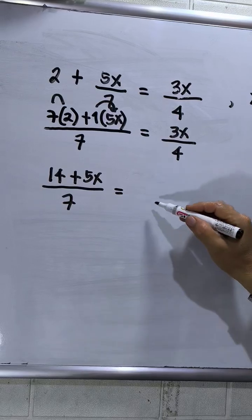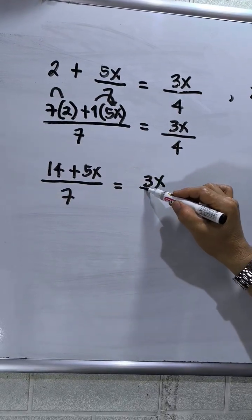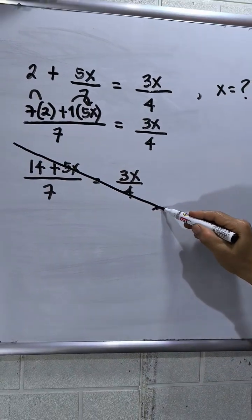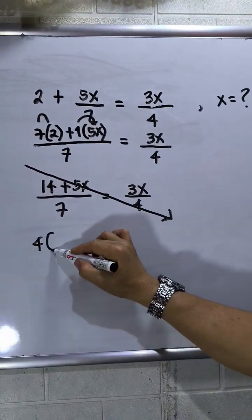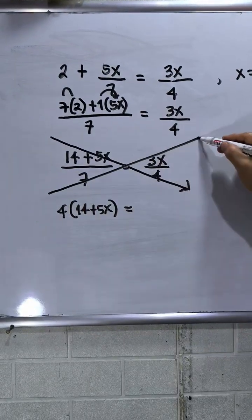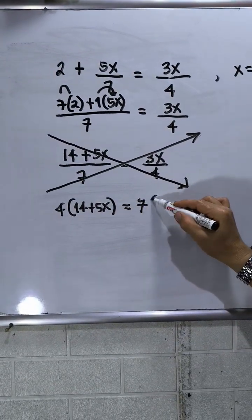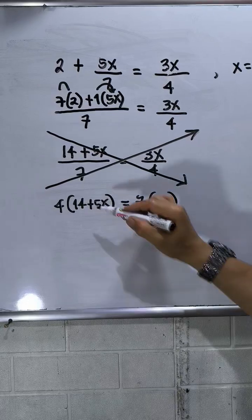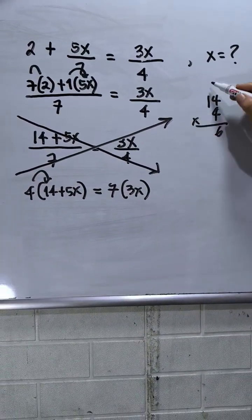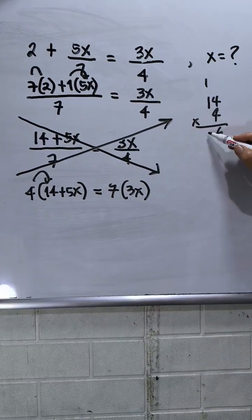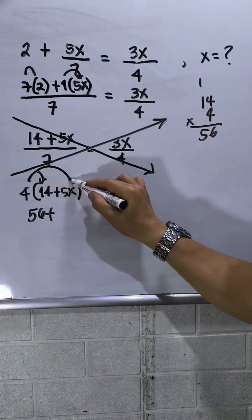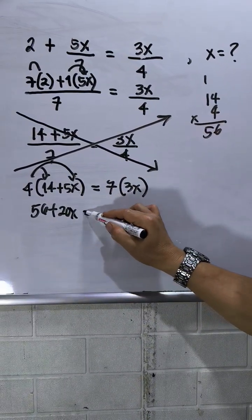Okay, then I will cross multiply. So this will be 4 times open brackets 14 plus 5x equals cross multiply again 7 times 3x. So this will be 14 times 4, so this will be 16 carry 1, 45, so this will be 56. Then plus 20x equals 21x.